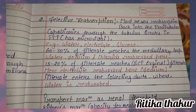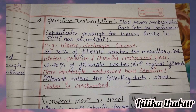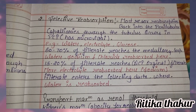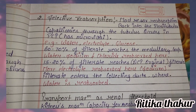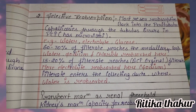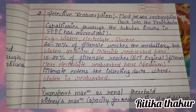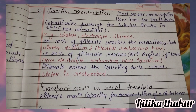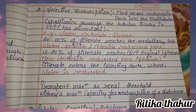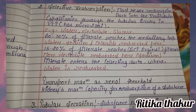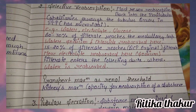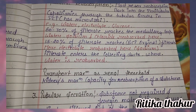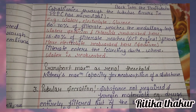Selective reabsorption: most reabsorption back into the peritubular capillaries through the tubules occurs in the PCT. Substances reabsorbed include amino acids, water, electrolytes, and glucose. About 60 to 70% of filtrate reaches the medullary loops, where water, sodium, and chloride are reabsorbed.